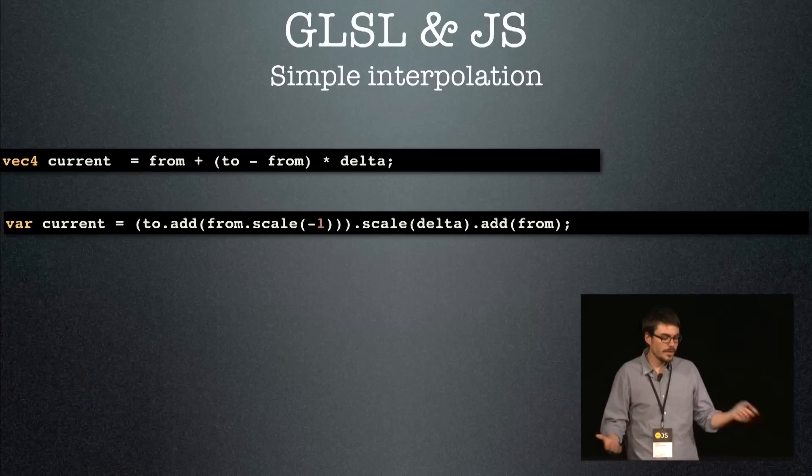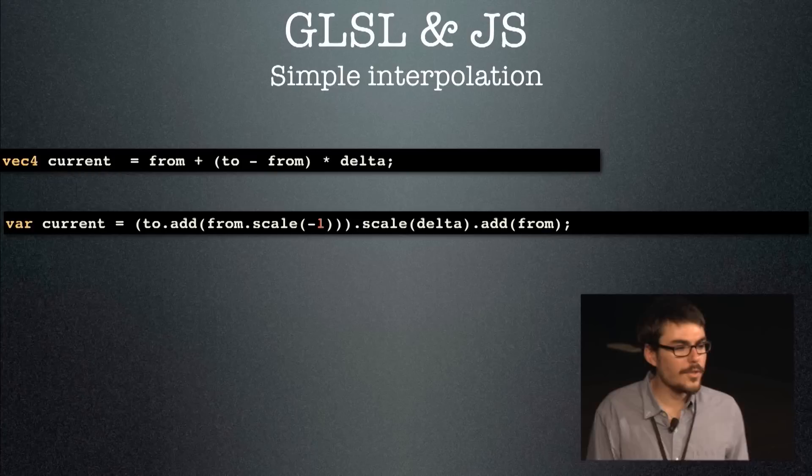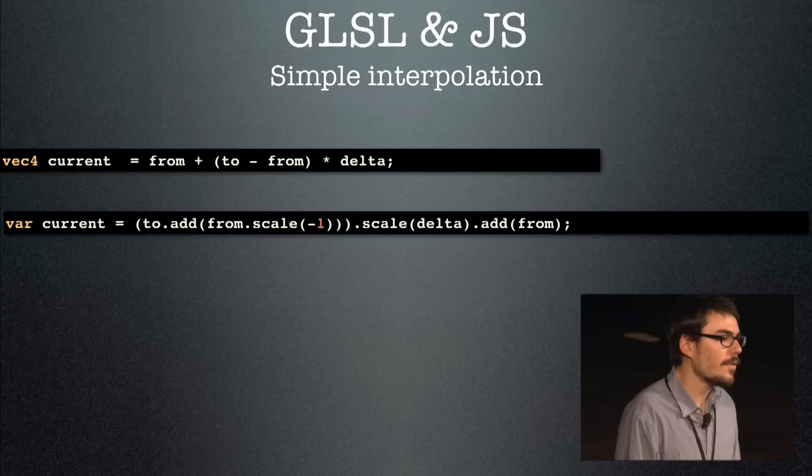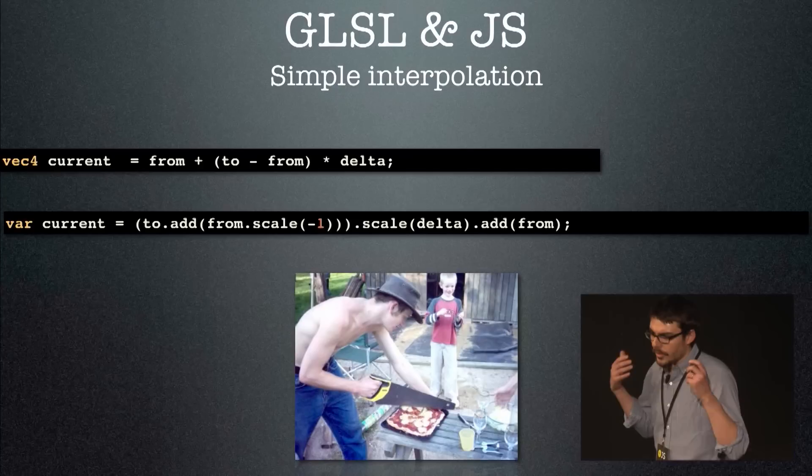Here's a quick comparison of a language with operator overloading versus one without. If you have a Vec4 and want to interpolate through it, in GLSL you just write the proper linear interpolation. Whereas in JavaScript, you need to define your own vector classes and then call all these complicated methods that really obfuscate what you're doing — you can't really understand the end result. So at one point you start to wonder whether you're using the right tool for the right thing.